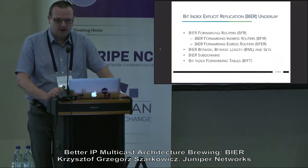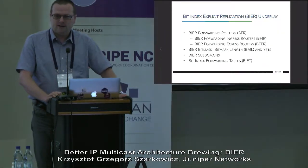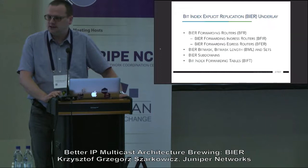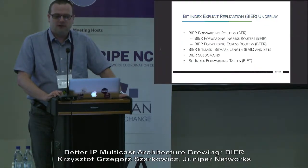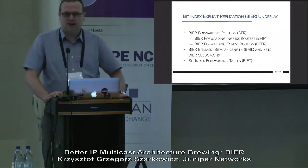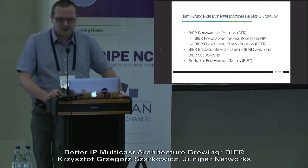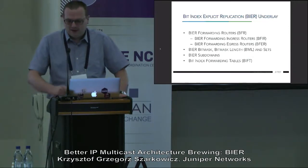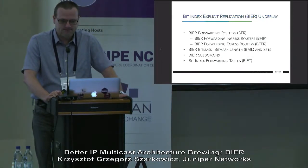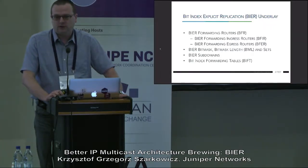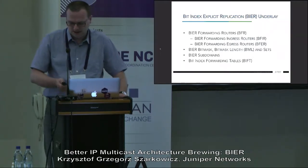Let's go into details. BIER defines several functions, similar to functions in label-forwarding delivery. Like we have Label Switch Routers (LSR) in a normal MPLS network, here we talk about BIER Forwarding Routers (BFR). There are ingress routers — like Label Edge Routers in MPLS — called BIER Forwarding Ingress Routers (BFIR). The really new concept is the BIER bitmask. We have bits, sets, and subdomains — these are new concepts: the BIER bitmask, BitStrings, and BitString subdomains. And we have BIER Forwarding Tables, kind of like an MPLS forwarding table.